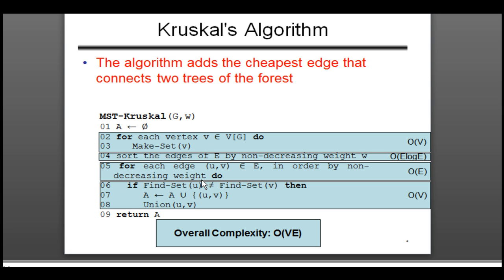Kruskal's algorithm first states that you have to make a set with minimum edges, and then you make another set elsewhere in the graph. If those sets are not joined with each other, then you union those sets — meaning if find-set(u) is not equal to find-set(v), then you union set u and v together.